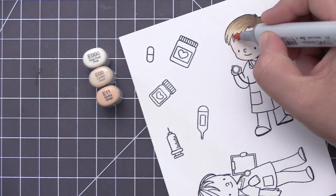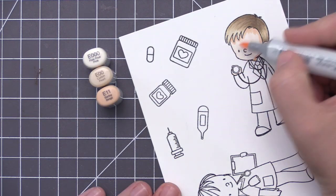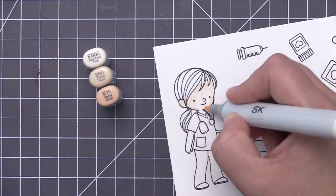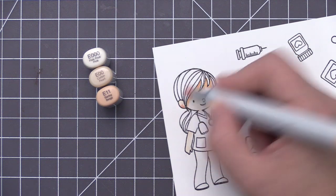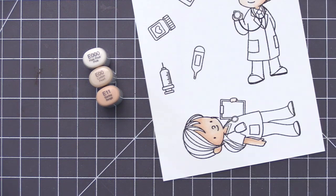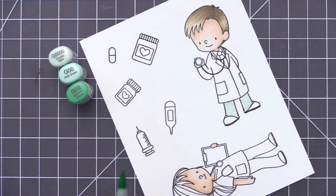For the skin, I'm using E000, E00, and E11 on both of them just to make the coloring go a little bit quicker. I just went ahead and did his skin first and then moved on to her. I'm going to jump around all over as I'm doing my coloring, trying to decide the colors I want to use.